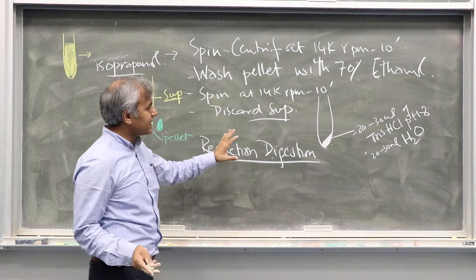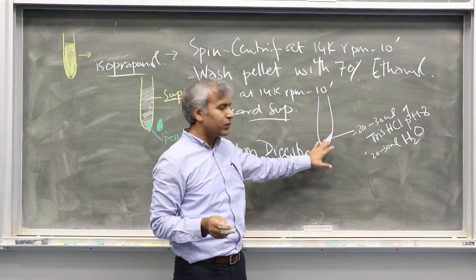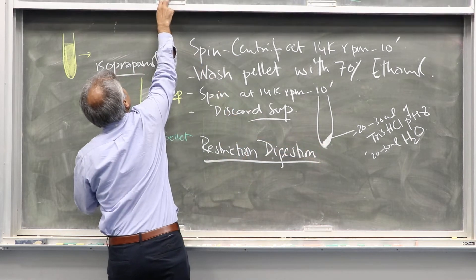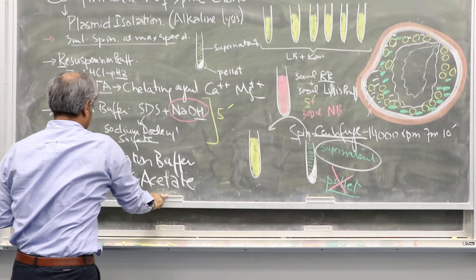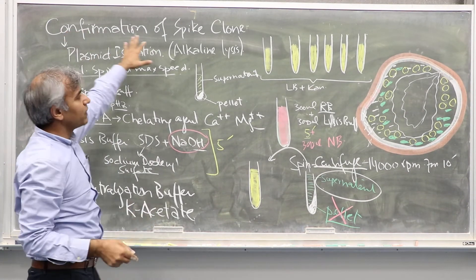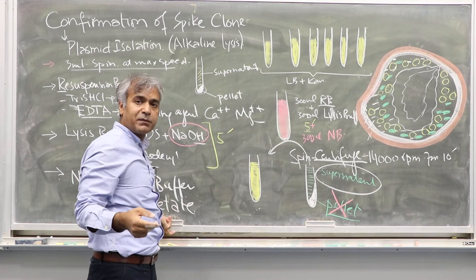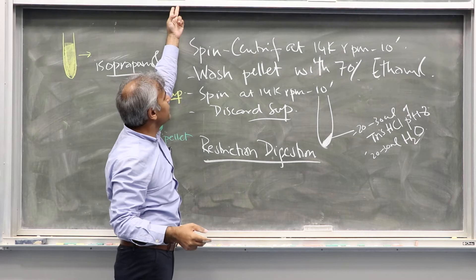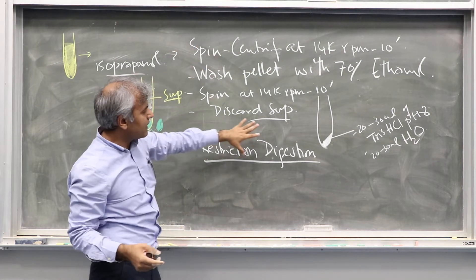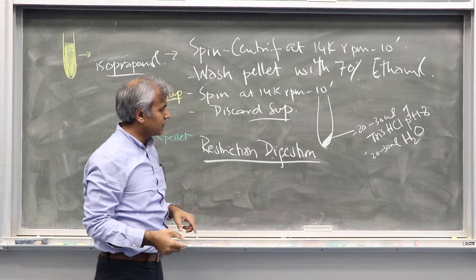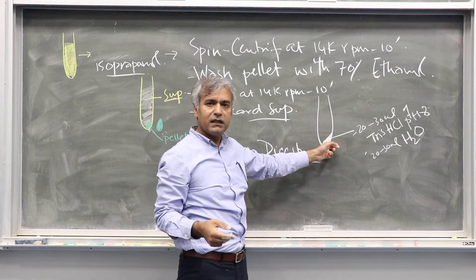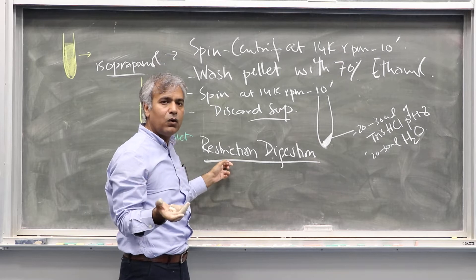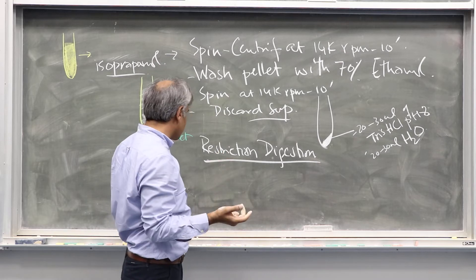We are going to confirm our clone — the confirmation of the spike clone. We went through all the plasmid isolation using the alkaline lysis method, and eventually we had the purified plasmid. Now we are going to confirm our clones using the restriction digestion method.